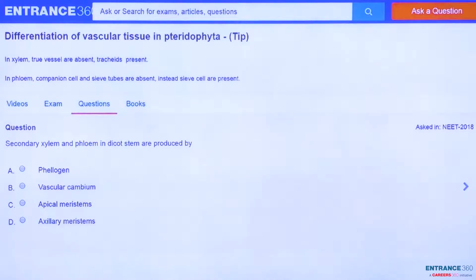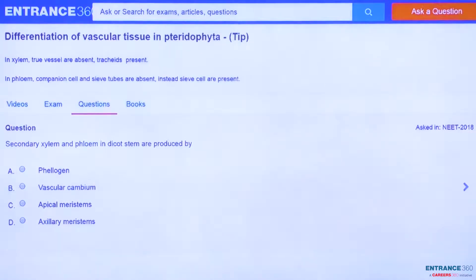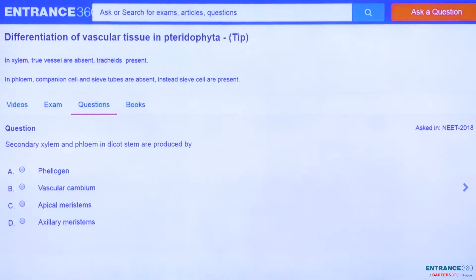The question asks which structure produces secondary xylem and phloem in dicot stems. The options are phellogen, vascular cambium, apical meristems, and axillary meristems.